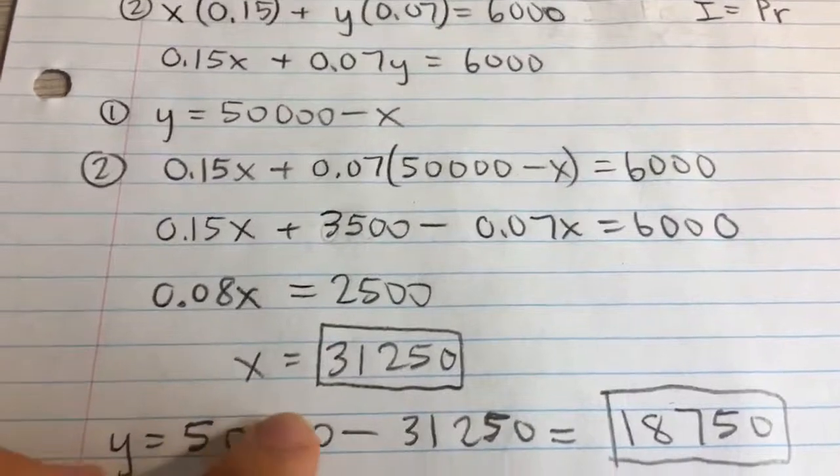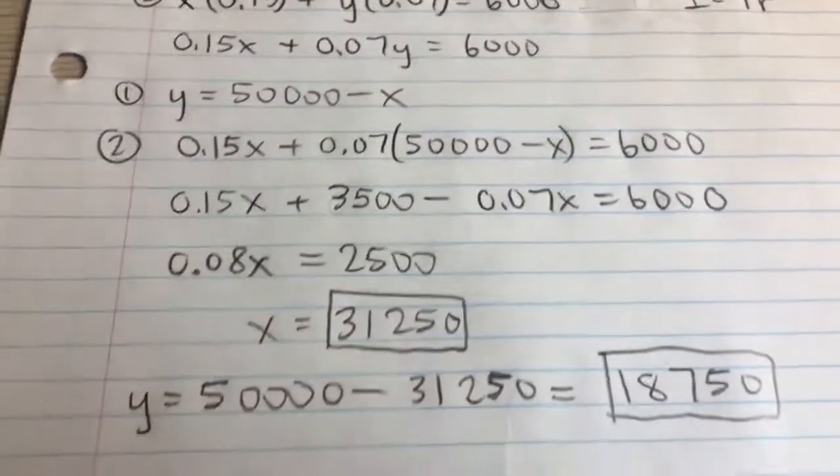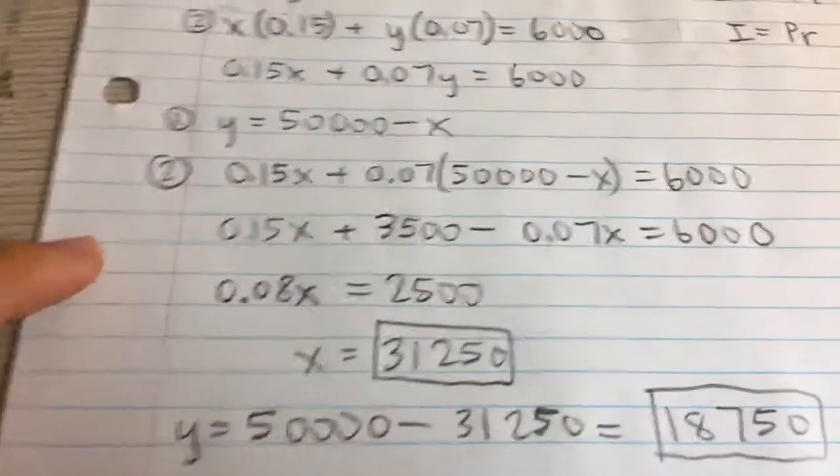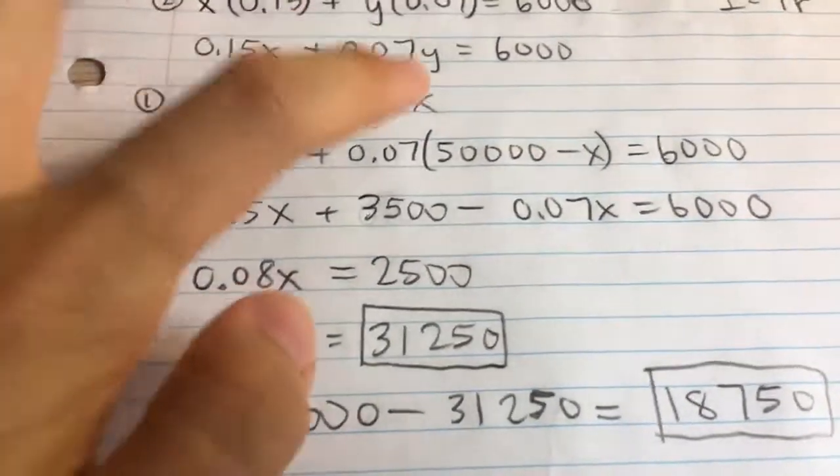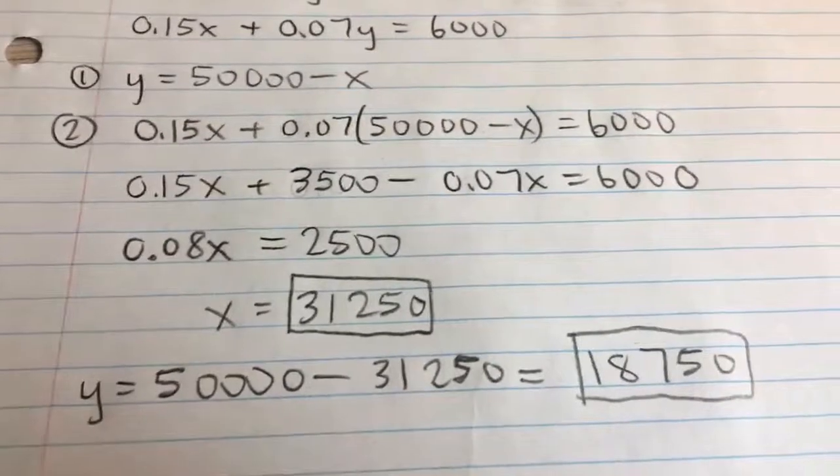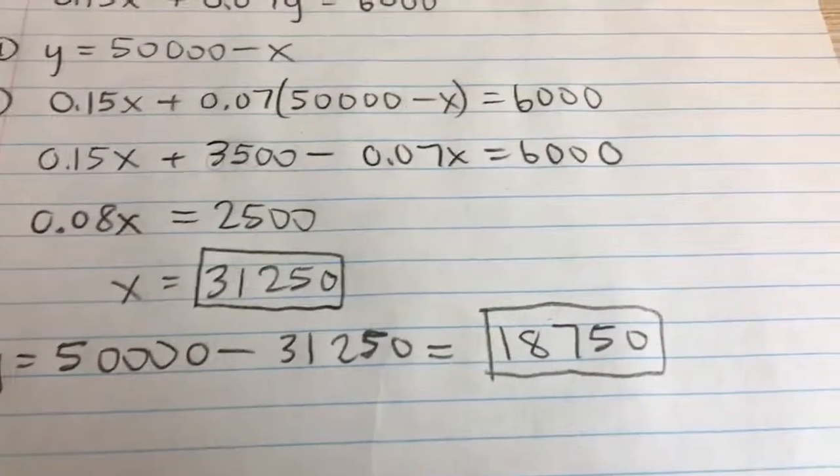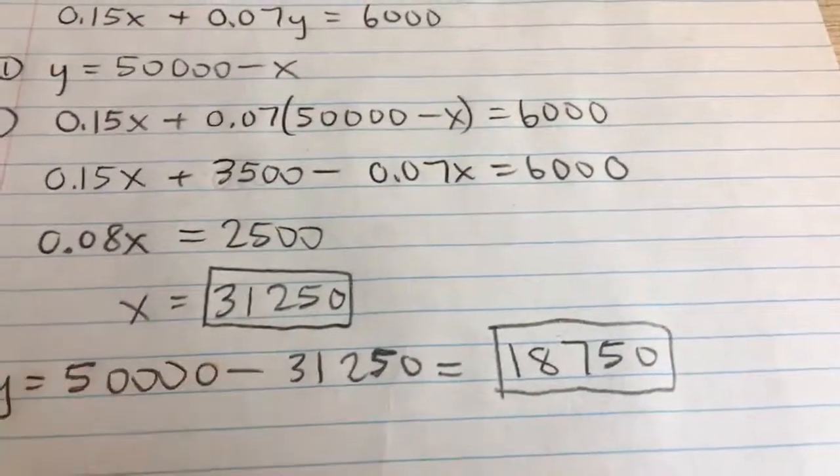This means $31,250 should be allocated to the 15% account. We can use this value to solve for Y. Remember, Y = 50,000 - X, so Y = 50,000 - 31,250 = 18,750. These are your two answers.